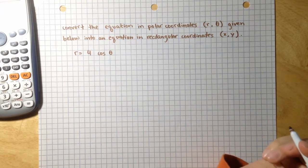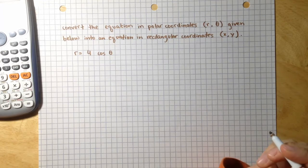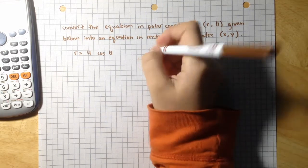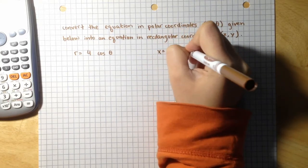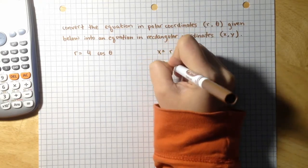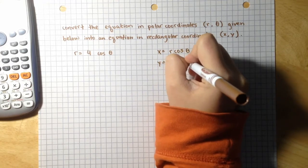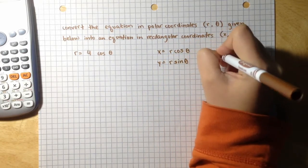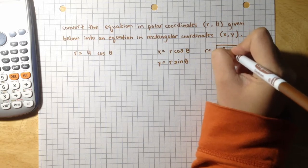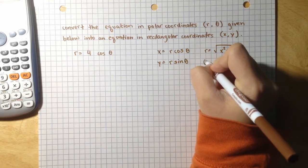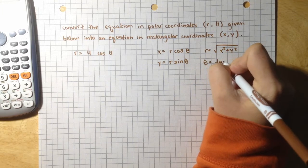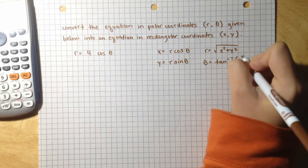So let's pull out all the formulas we know for polar coordinates and rectangular coordinates conversions. x equals r cosine theta, y equals r sine theta, r equals the square root of x squared plus y squared, and theta equals the inverse tangent of y over x.